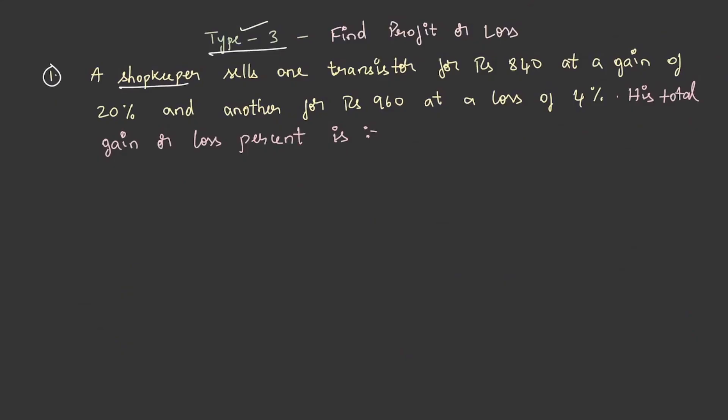A shopkeeper sells one transistor for rupees 840 at a gain of 20 percent and another for rupees 960 at a loss of 4 percent. His total gain or loss percent is?